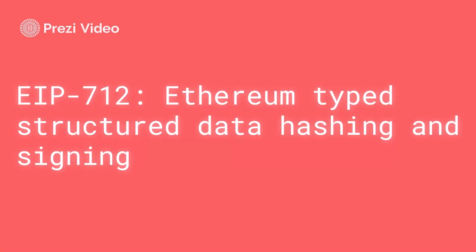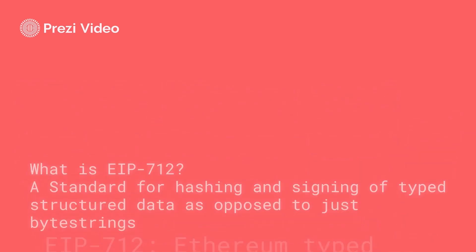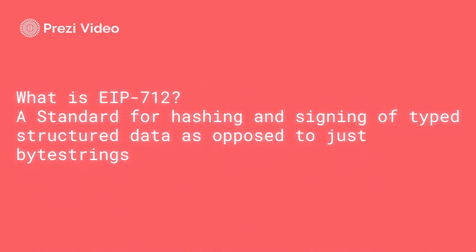Hello and welcome. In this video we will learn about EIP-712. We are going to see what EIP-712 is, why we need it, and finally we will see it in practice by taking a simple example. So let us start with what EIP-712 actually is. It's basically a standard for hashing and signing structured data, as opposed to just byte strings.